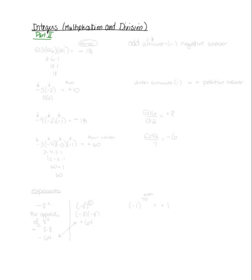When you are multiplying, I want you to count the number of negative signs. For example, if I give you negative three times negative six times negative one, how many negative signs do you count? There are three. When there are an odd amount of negative signs, you are going to get a negative answer.